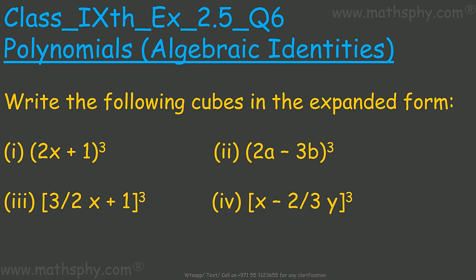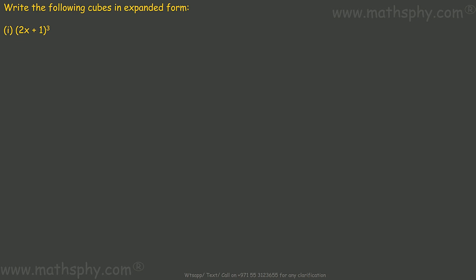This one here it says write the following cubes in the expanded form. So far what we have been seeing was square; this time we will work into cubes. Now if you remember this identity: x plus y whole cube equals to x cube plus y cube plus 3xy times x plus y, and x minus y cube.